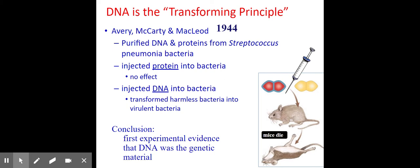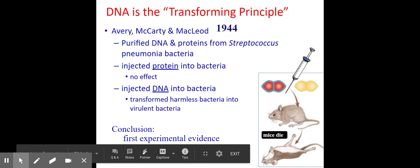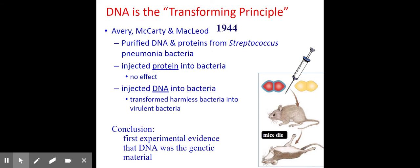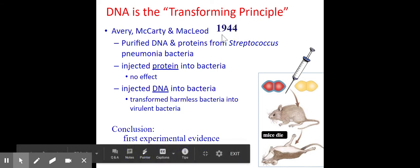Avery, McCarty, and McLeod built upon this. They purified DNA and proteins from pathogenic bacteria and injected these into non-pathogenic bacteria. They found that only the DNA caused transformation — injecting proteins from the pathogenic bacteria did nothing. This was the first experimental evidence that DNA was the actual genetic material, back in 1944.